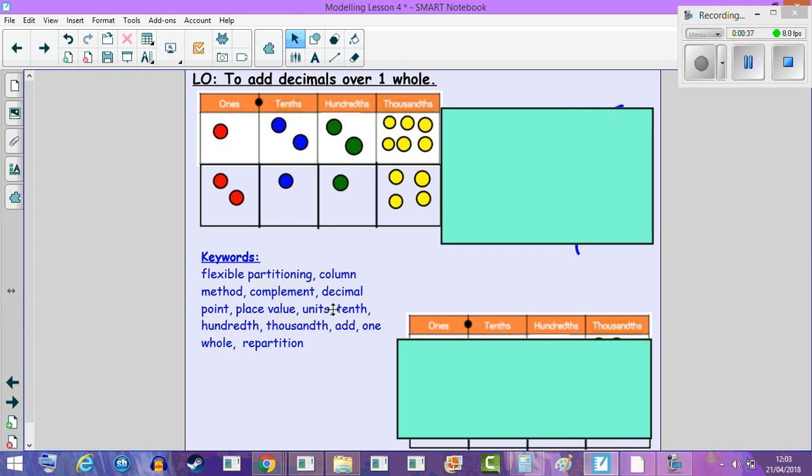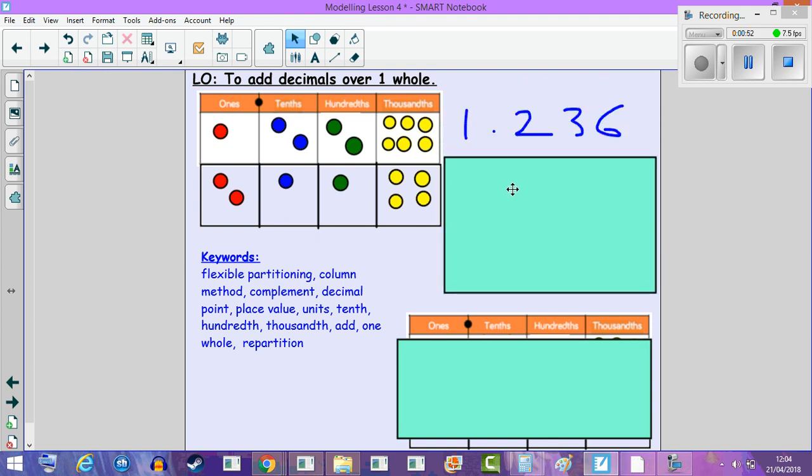Here we are presented with a place value chart, and we are going to add these numbers. In the first row we can see that the number is one ones, two tenths, two hundredths, and six thousandths, so the number should be 1.236.